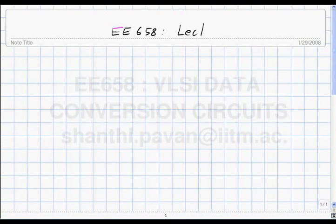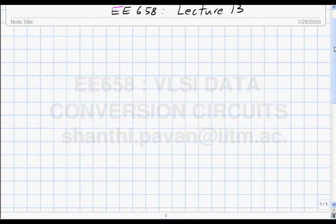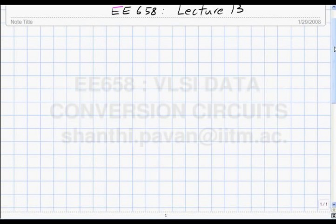E658, lecture 13. During the last lecture, we were trying to get voltage gain. The basic idea was to take a capacitor which has some charge on it proportional to the input and somehow transfer that same charge onto a smaller capacitor.